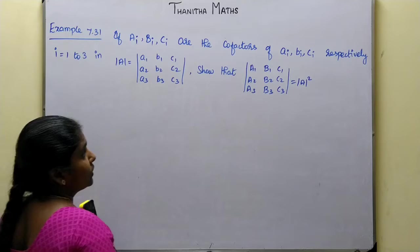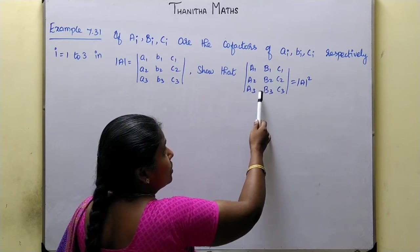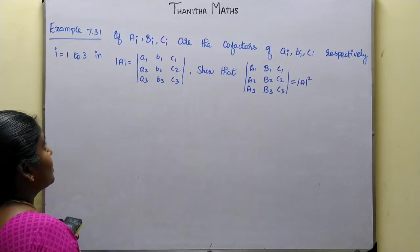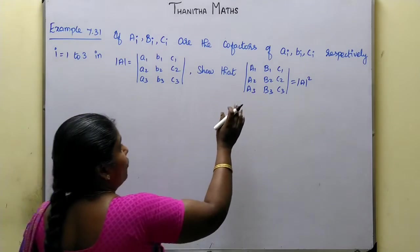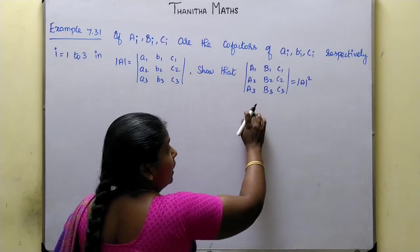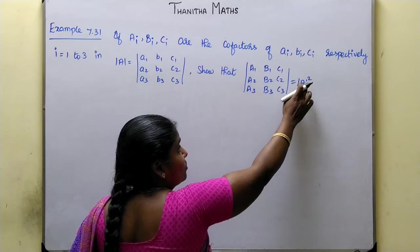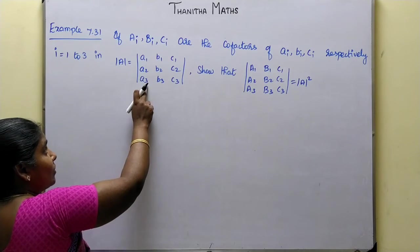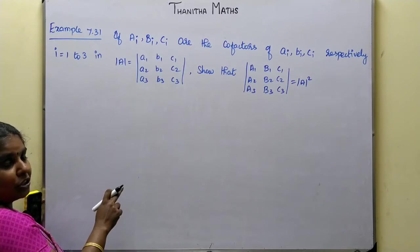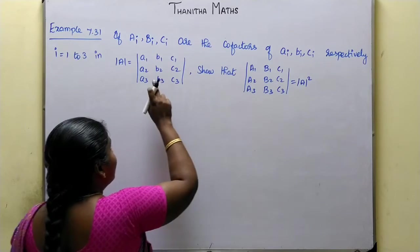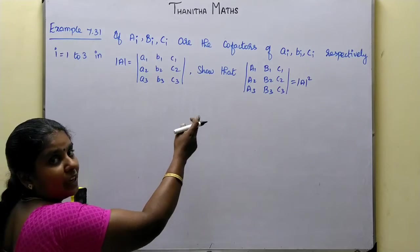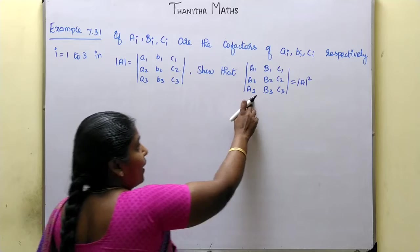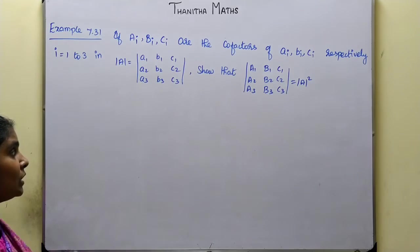Show that the determinant of capital A1, B1, C1, A2, B2, C2, A3, B3, C3 is equal to the determinant of A whole squared. Now we will prove that the co-factor matrix determinant value and the original matrix determinant value — if you find the determinant of A, it equals the square.